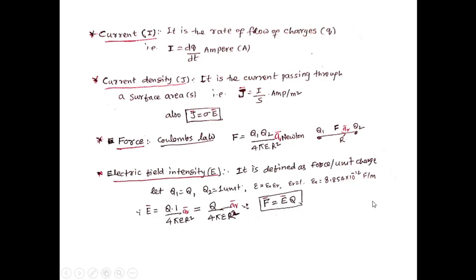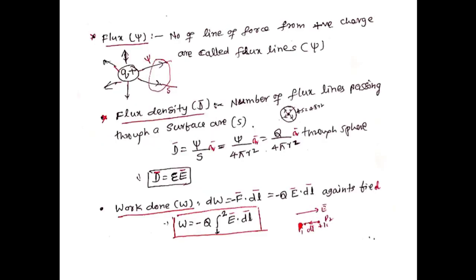Next we will define electric field intensity. It is defined as force per unit charge. If two charges are placed at distance R, one with magnitude Q1 and another with unit charge, then the force experienced is given by E bar = Q / (4π epsilon R²) R-hat, and F bar = E bar × Q bar. Next, what is flux?